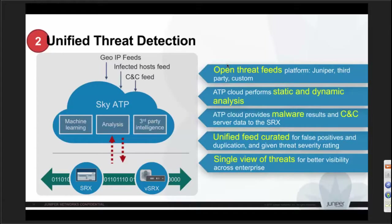Static analysis uses machine learning techniques — for example, if a Word file has a high ratio of macros to words, that's potentially a more threatening file. All feeds are compiled and based on local intelligence, curated to give a single unified threat level that is passed back to the policy engine, which can take decisions on it.